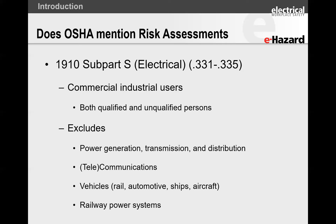The next standard is 1910 subpart S, which is electrical — this applies to commercial and industrial users, and it applies to both qualified and unqualified persons. This covers people who are making food products, packaging, managing high-rise condominiums, and similar operations. What is excluded from subpart S is power generation, transmission, and distribution; communications like telecommunications, 5G, and fiber optic; vehicles including rail, automotive, ships, and aircraft; and railway power systems including overhead lines, distribution systems, and switching stations.